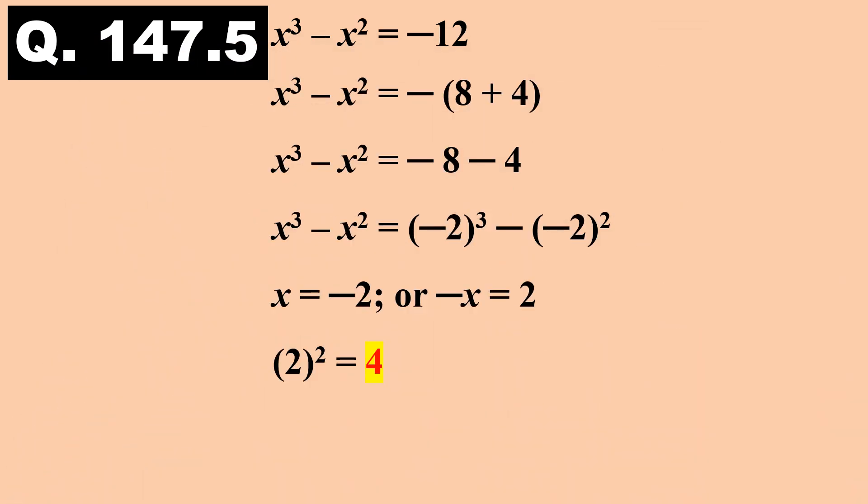Answer to last question 147.5. Break 12 as 8 plus 4. Minus 8 is the cube of minus 2. 4 is the square of minus 2. Thus, we get x is equal to minus 2. So, minus x is 2, and 2 power 2 is equal to 4.